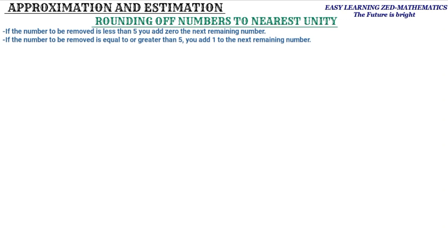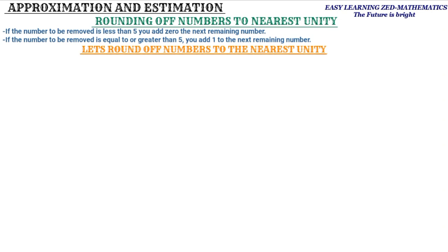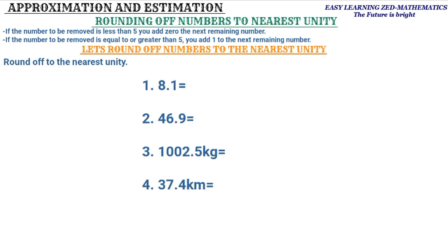Now let's round off these numbers to the nearest unit. When we talk about rounding off a number to the nearest unit, we mean we need to write the number as a whole number — without decimal numbers and not as a fraction. Basically we need to write that number as a whole number.